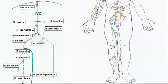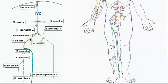Starting distally, we begin with the posterior tibial vein, located behind the lower leg. The anterior tibial vein takes blood up to the popliteal fossa, where it joins the posterior tibial vein to form the popliteal vein. The popliteal vein delivers blood to the femoral vein, which passes under the inguinal ligament to connect to the external iliac. The internal iliac joins the external iliac to form the common iliac.